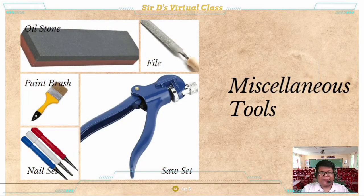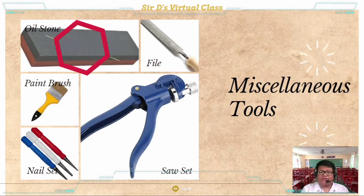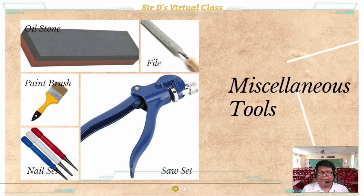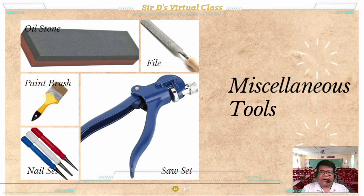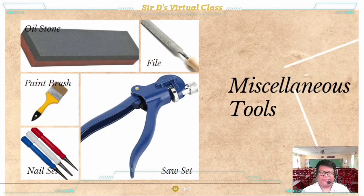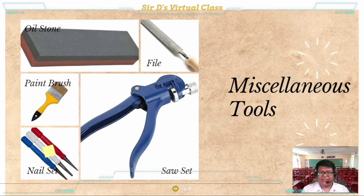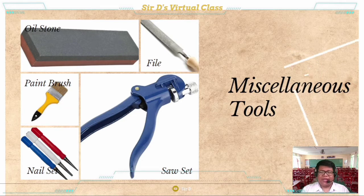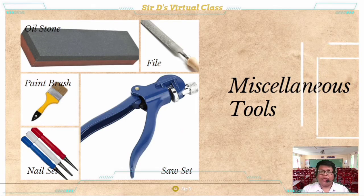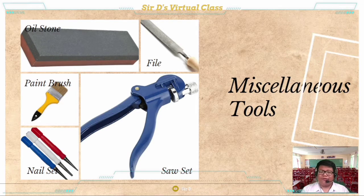The sharpening tools group includes the oilstone, used for sharpening edge cutting tools such as the chisel; the file, used to smoothen metal and wood surfaces; the paintbrush, used to apply paint or varnish on wood surfaces; the nail set, used to drive the head of nails lower than the surface of wood; and the saw set, used to bend the upper half of each tooth to one side or the other to form a set.